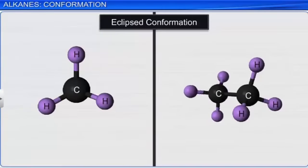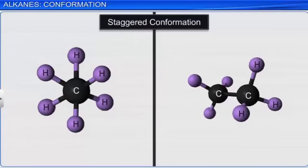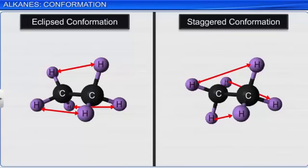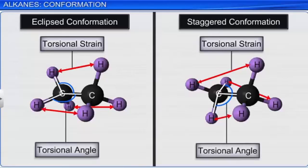In the eclipsed conformation, the molecule is the least stable, as the repulsive force between the electrons is maximum, due to the close spatial arrangement of the carbon-hydrogen bonds. In the staggered conformation, the molecule is the most stable, as there is minimum repulsive force between the electrons because the carbon-hydrogen electrons are farthest from each other. The repulsive interaction between the electron clouds in a molecule which affects the stability of a conformation is called torsional strain. Its magnitude depends upon the angle of rotation about the carbon-to-carbon bond. This angle is known as the torsional or dihedral angle.